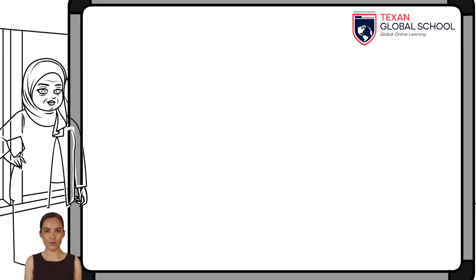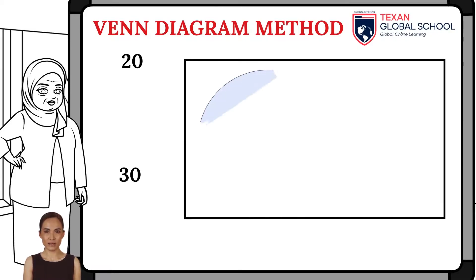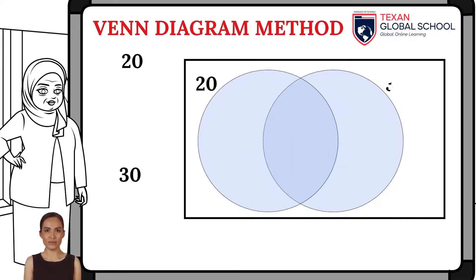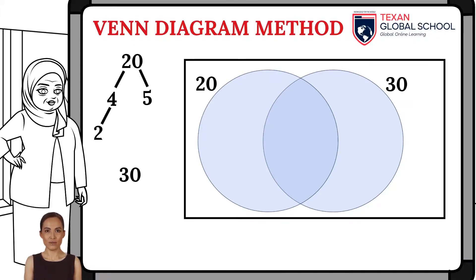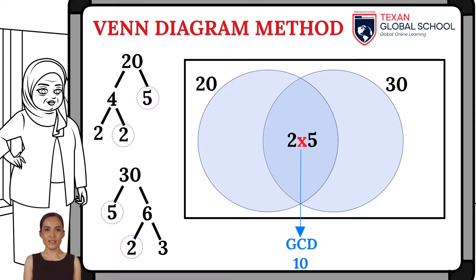In this last example, we will compare the greatest common divisor and least common multiple of 20 and 30 by using the Venn diagram. Let's obtain the prime factors of 20 and 30. For 20, they are 2, 2, and 5. For 30, they are 2, 3, and 5. The repeated factors are placed in the intersection and form the greatest common divisor — in this case, 2 times 5, that is 10.